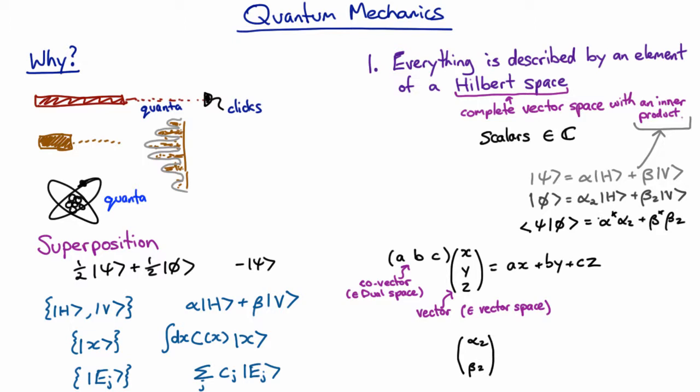Then actually in order to represent this thing as the appropriate co-vector, remember for this one all we did was we just rearrange the numbers. This one we almost do that, we rearrange the numbers so we take our alpha and our beta and we put them in a row, but we also take the complex conjugate.